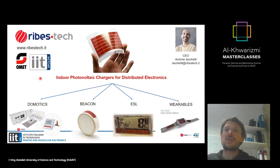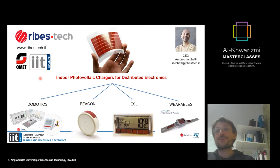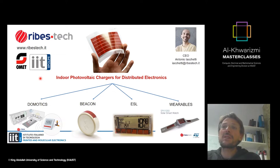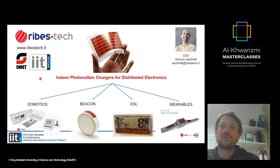A first case is our startup Ribest Tech, created in 2016, dedicated to indoor organic photovoltaics. The goal is to tune printed films to harvest artificial light in offices and supermarkets, powering existing electronic applications — distributed sensors, IoT devices, robotic vehicles, and so on.